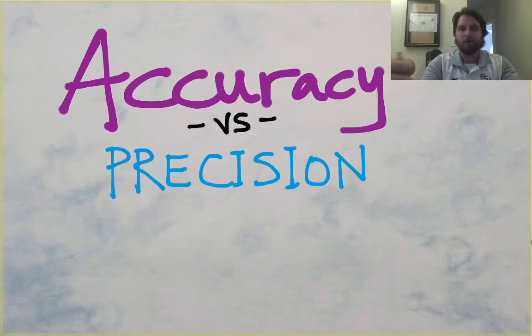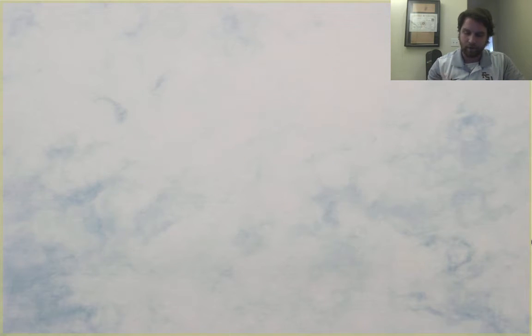Alright guys, very important concept when you're looking at scientific method and actually doing laboratories is the concept of accuracy versus precision. Are your measurements accurate? Are they precise? Are they both? Well let's take a look at the difference of what these things represent.